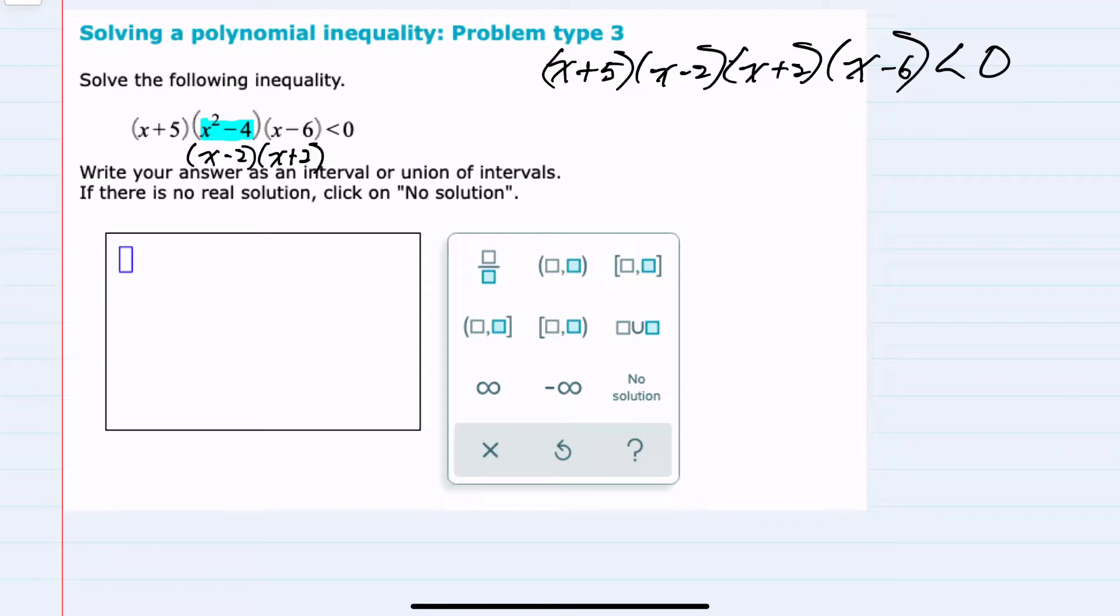Now that the left-hand side is fully factored, I can set each of these factors equal to zero. So the first one, x plus 5, setting that equal to zero and solving for x gives me x equals negative 5.